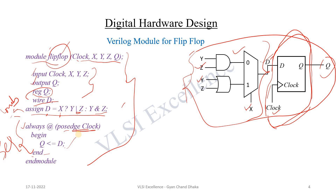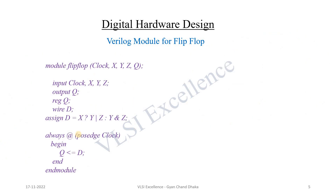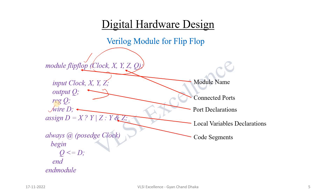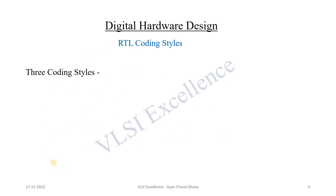I hope the modeling of this complete digital circuit using different Verilog constructs is clear. Let's look at the different parts of a Verilog module: we have the module name, then the port list which are the ports of this module, then the port declarations for inputs and outputs, then the local variable declarations, and then the code segments — one for the combinational part and one for the sequential part of the top-level module.